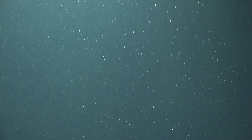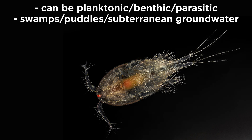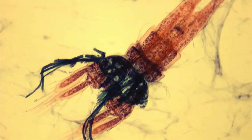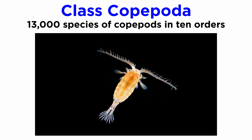Copepods have been found in nearly every freshwater and saltwater habitat on Earth. Though most species are planktonic, some are benthic, others are parasitic, others live in swamps and small puddles, and still others live in subterranean groundwater. Some species have been used to combat mosquito larvae and occasionally turn up in drinking water, but they are completely harmless to humans. Though most are tiny, their collective biomass exceeds billions of metric tons. There are at least 13,000 described species of copepods, often split into ten orders.